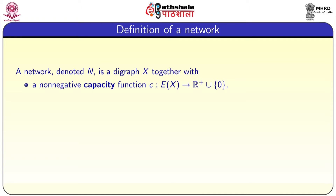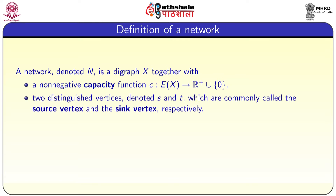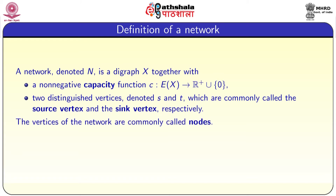For every directed edge, we have a capacity. Two distinguished vertices denoted s and t, which are commonly called the source vertex and sink vertex respectively. The vertices of the network are also commonly called nodes.